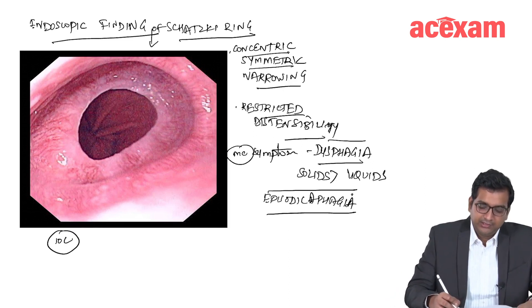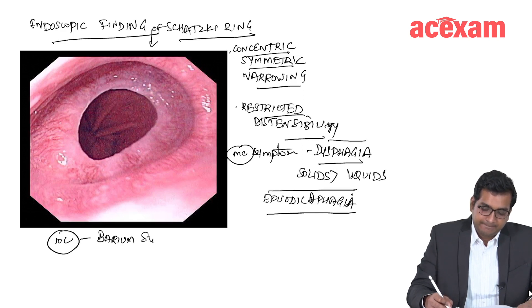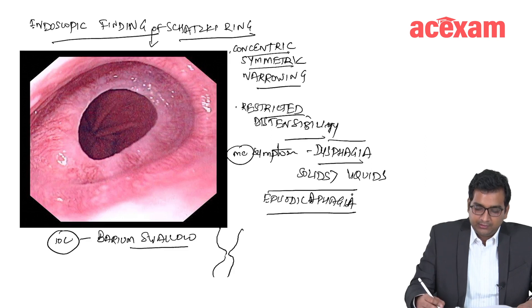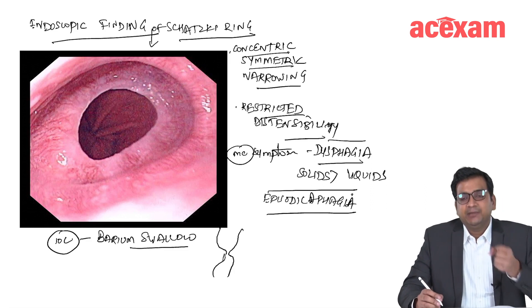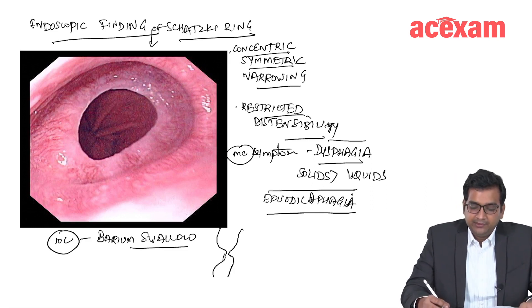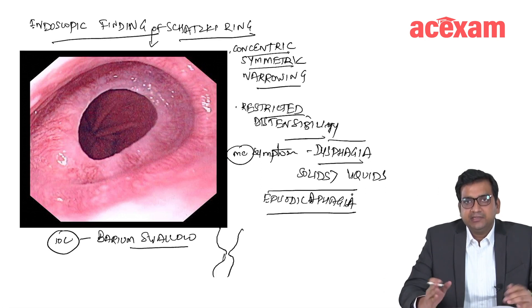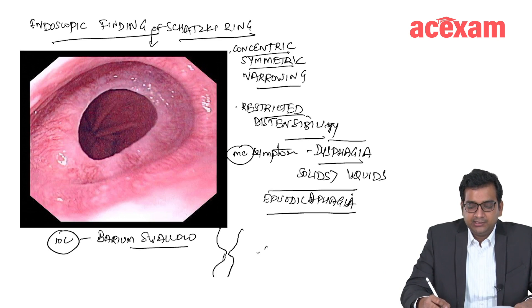The investigation of choice is barium swallow and the finding is something like this which I have already shown to you and there will be a concentric symmetric narrowing. When Schatzky have described this ring, he described it classically to be at the level of GE junction or at the level of squamocolumnar junction.